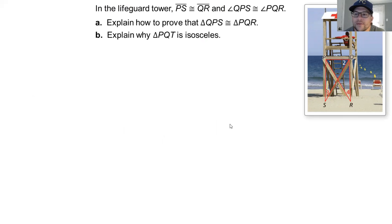So we have a lifeguard tower where the line PS is congruent to the line QR and the angle QPS is congruent to the angle PQR. Explain how you would prove triangle QPS is congruent to triangle PQR and then explain why that triangle is isosceles.